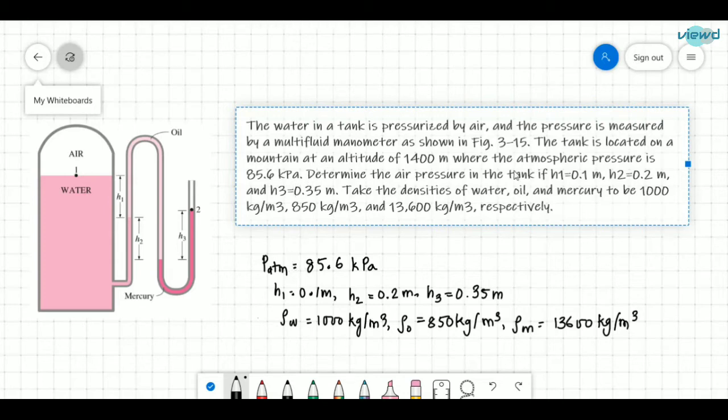So what do we need to find? We need to find the pressure of this air. So we need to find this pressure. So what is the pressure here? There is 0.1. So the air pressure is P1.